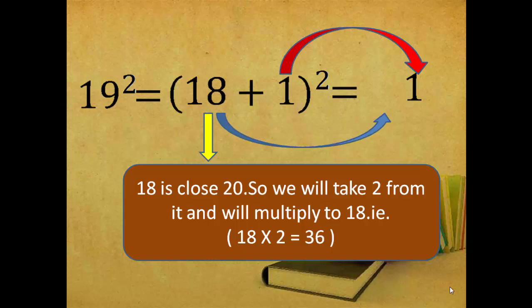So the answer is 36. Square of 19 is equal to 361. That is 361.